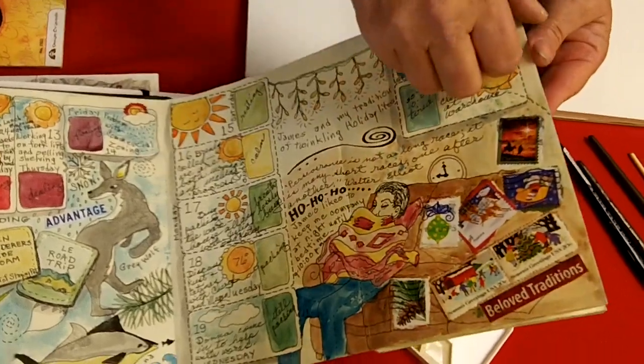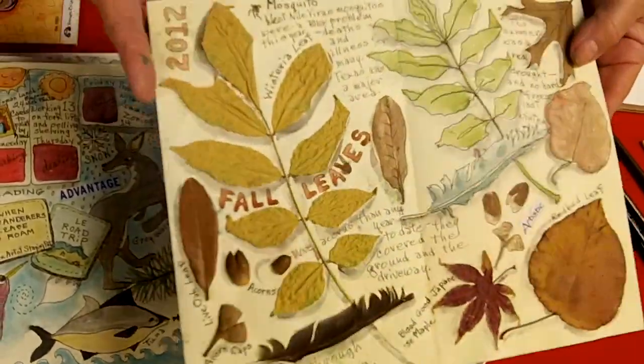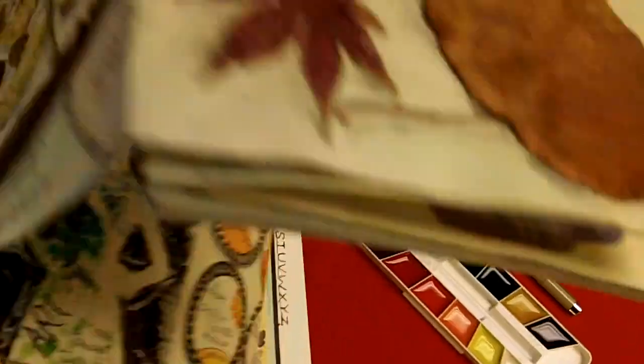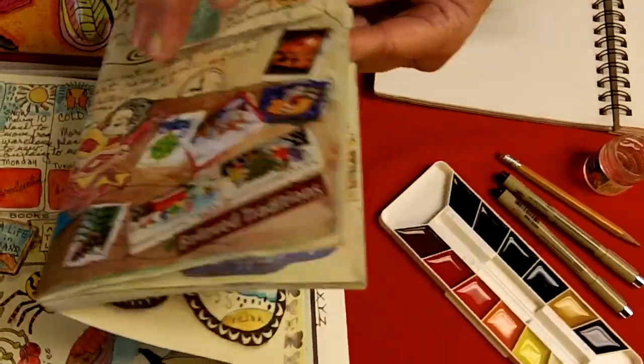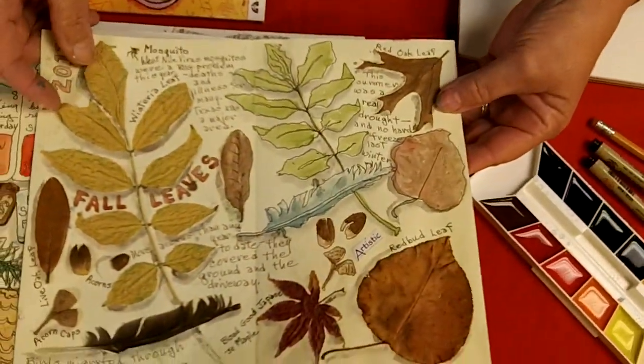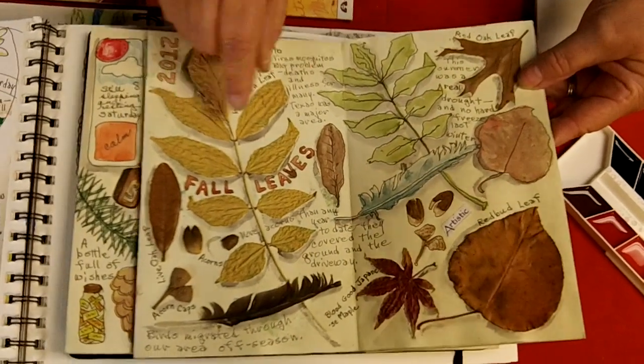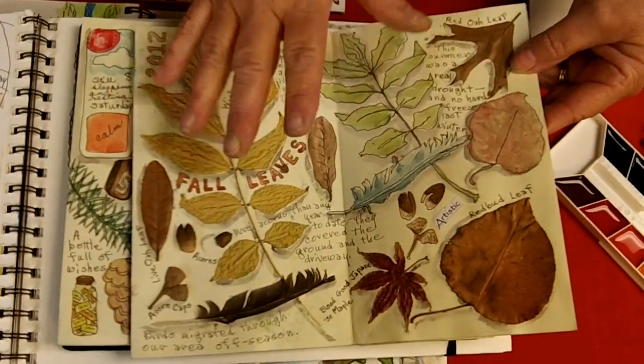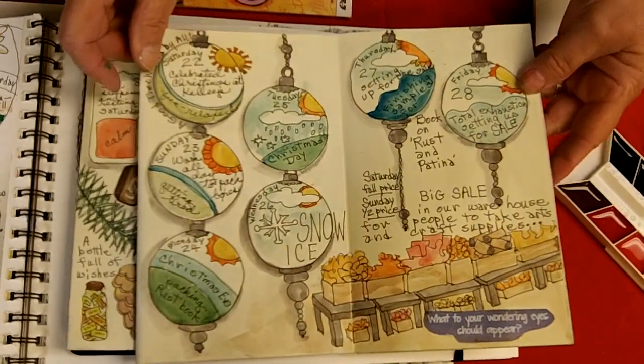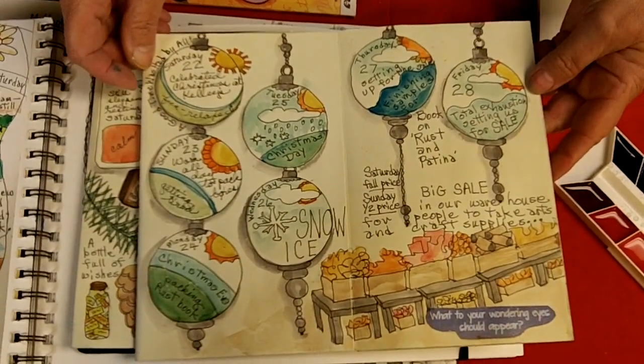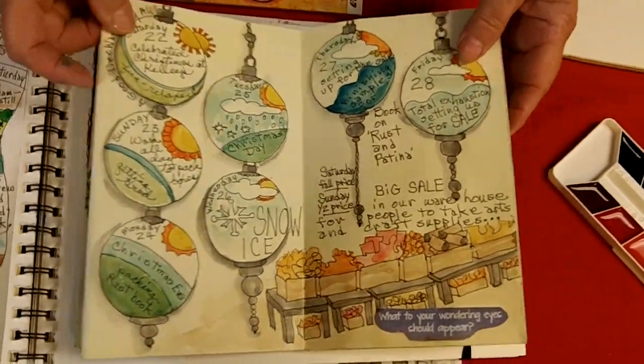That's my husband asleep in the evenings while I'm drawing and watching TV. And then these were some leaves that I collected. And here was what I did for Christmas. Again, seven days, seven sections.